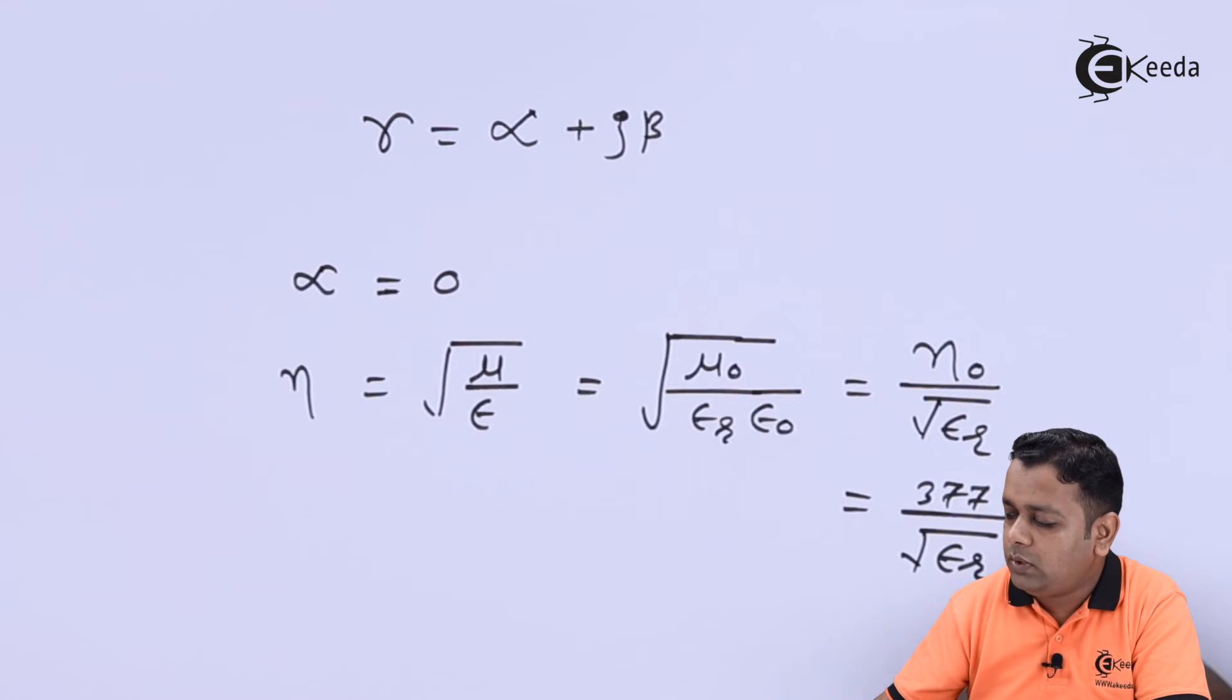Now as the information regarding α is known to us, and the intrinsic impedance we have seen, β is the phase shift constant. β is given as ω√(με).